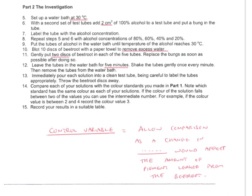So, just a couple of things that are really important. Highlighted five different control variables here. There are usually — the vast majority of the time — two marks for control variables. The first mark point allows comparison, and the second mark point: if you change this value — for example, if you change the temperature, it would affect the amount of pigment leaked from the beetroot. If you change the time incubated for, it would affect the amount of pigment leaked from the beetroot. So, all is related to the dependent variable.